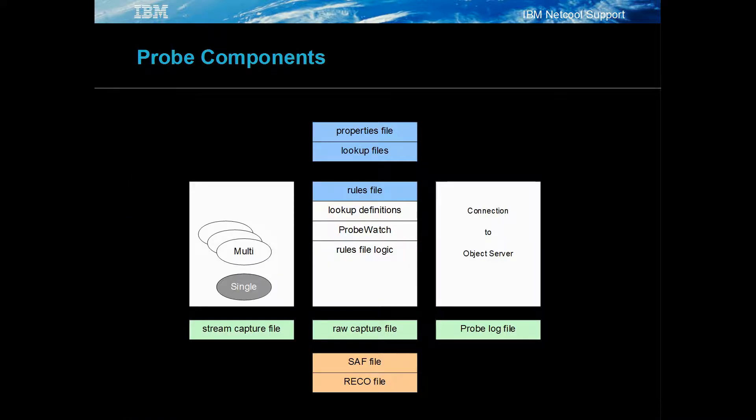The probes are made up of common features and probe-specific features. Events are read in from one or more heads, processed using rules files and look-ups, and sent to one or more object servers.